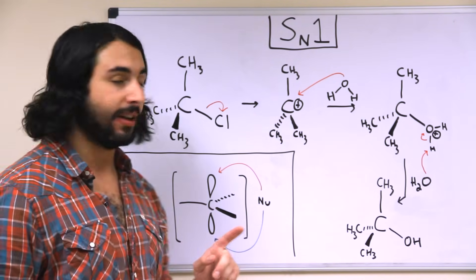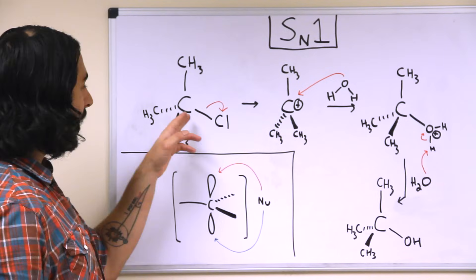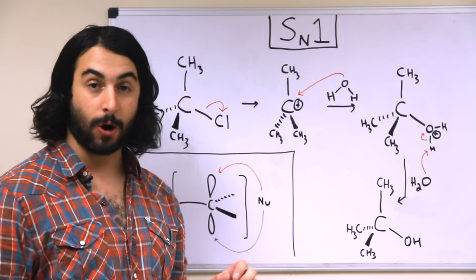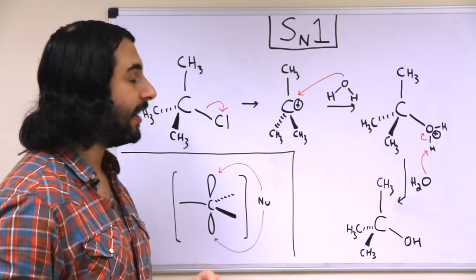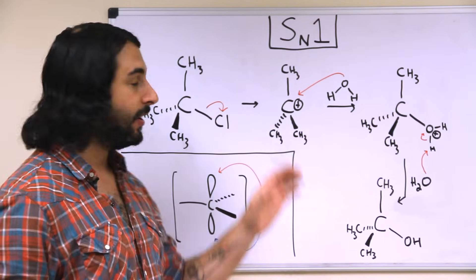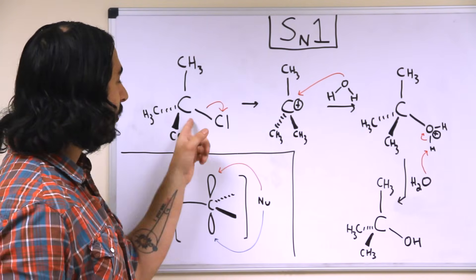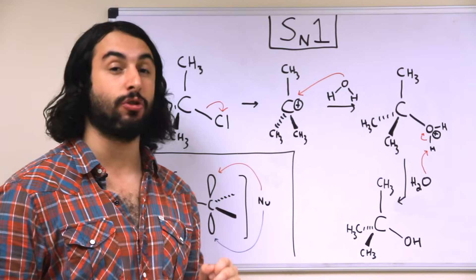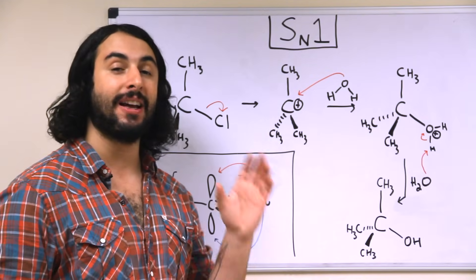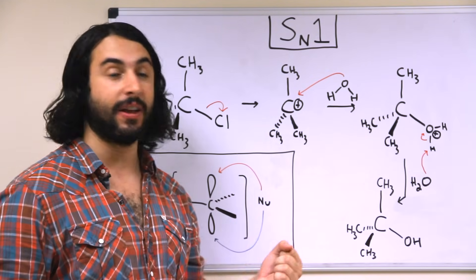So one key thing to understand is that we're going from a sp3 hybridized tetrahedral carbon to an sp2 hybridized trigonal planar situation here, because this carbon is losing an electron domain. So now that this carbon, with a formal positive charge, has only three electron domains, it's going to have trigonal planar geometry.